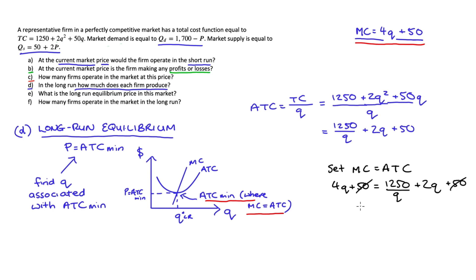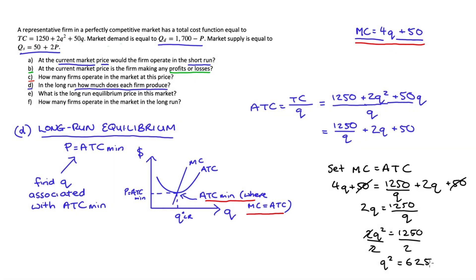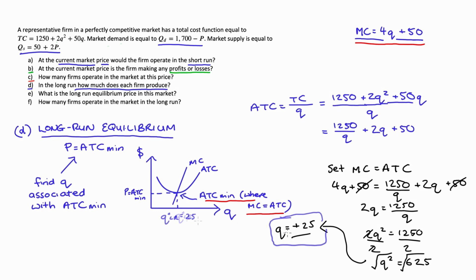Cancelling the 50s and subtracting 2Q from each side gives 2Q equals 1250/Q. Multiplying both sides by Q: 2Q squared equals 1250. Dividing by 2: Q squared equals 625. Taking the square root: Q equals plus or minus 25. We take the positive value, so Q_LR equals 25. That's our long-run equilibrium firm output, and I've put it on the diagram.